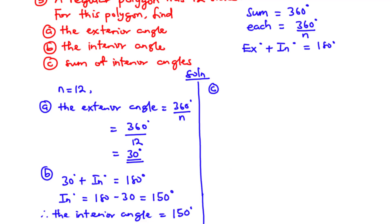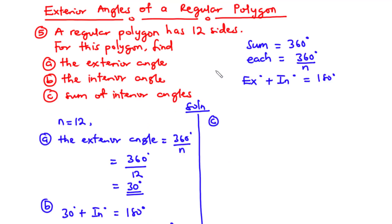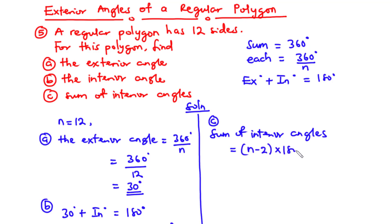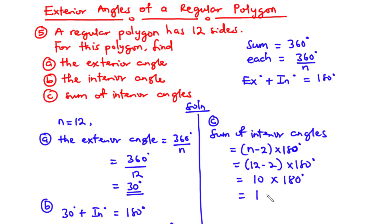For the sum of interior angles with N equals 12: (12 minus 2) times 180 = 10 times 180 = 1800 degrees. Therefore, the sum of interior angles of this regular polygon is 1800 degrees.